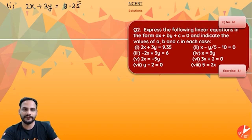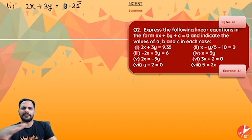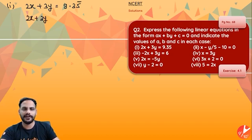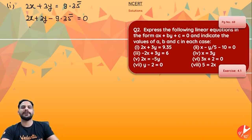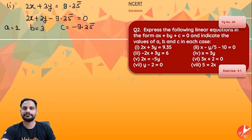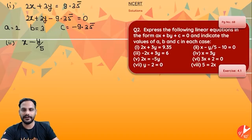2x + 3y = 9.35̄, where the bar means 9.3555... repeating. Shift this part over: 2x + 3y − 9.35̄ = 0. It is now in the form ax + by + c = 0. So a is the coefficient of x, which equals 2; b is the coefficient of y, which is 3; and c is −9.35̄.